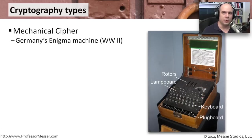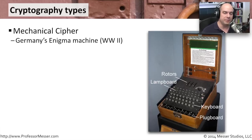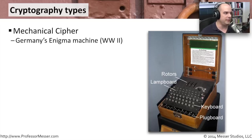In modern times, ROT13 or a transposition cipher is not really going to keep things very safe. We started to see mechanical ciphers appear around the World War II time frame. This is one that Germany used — this is an Enigma machine, which took a message and encrypted it using a piece of machinery. You would have to have this machine on both ends to decrypt the messages being sent back and forth. Being able to crack that particular encryption code was an extremely important part of World War II.